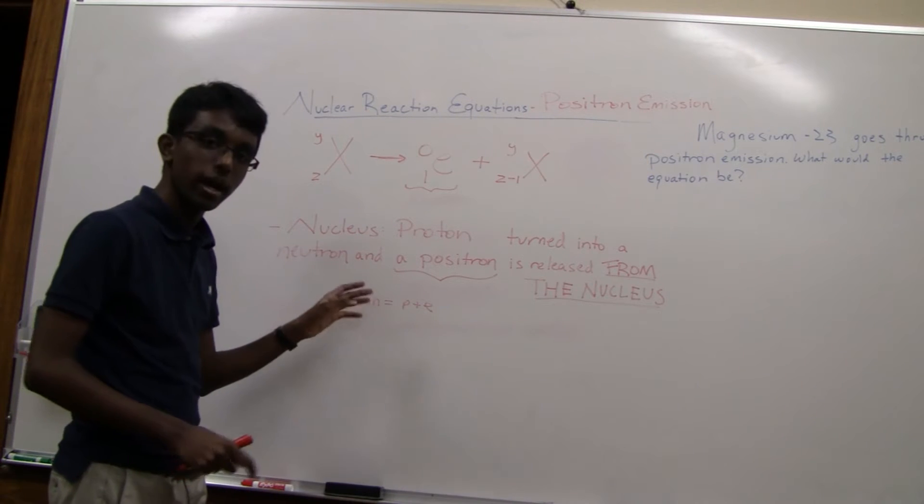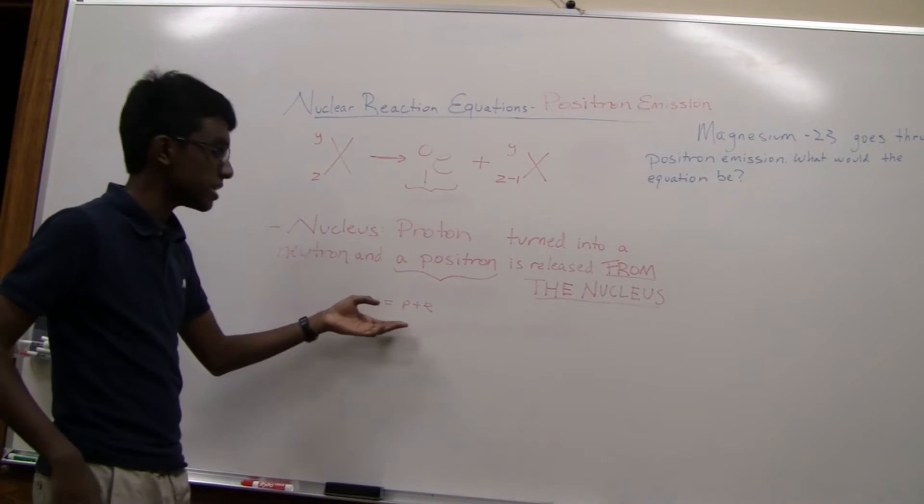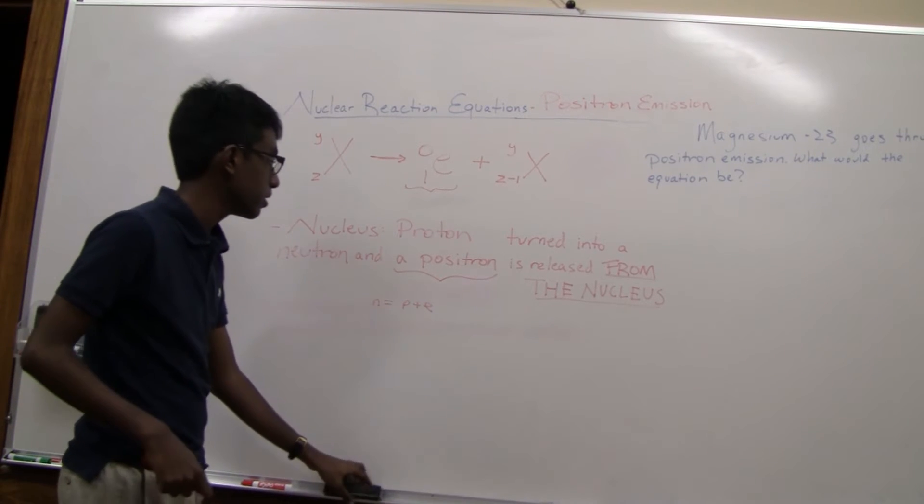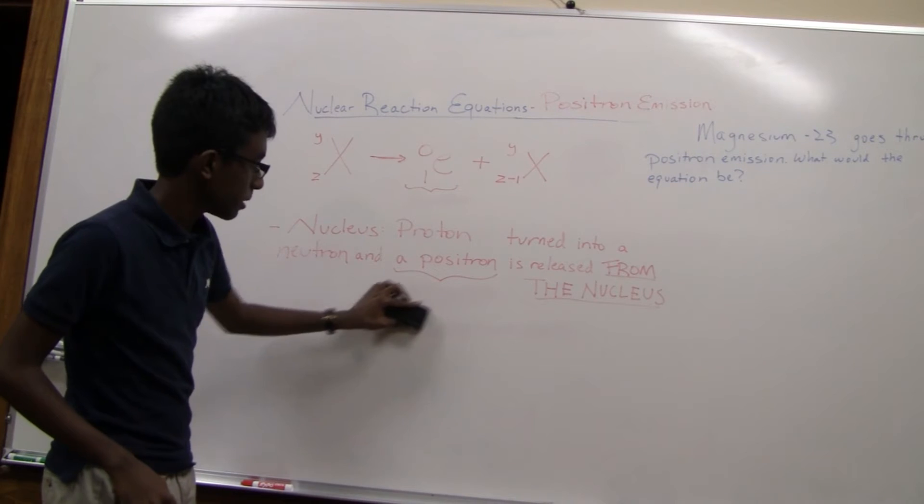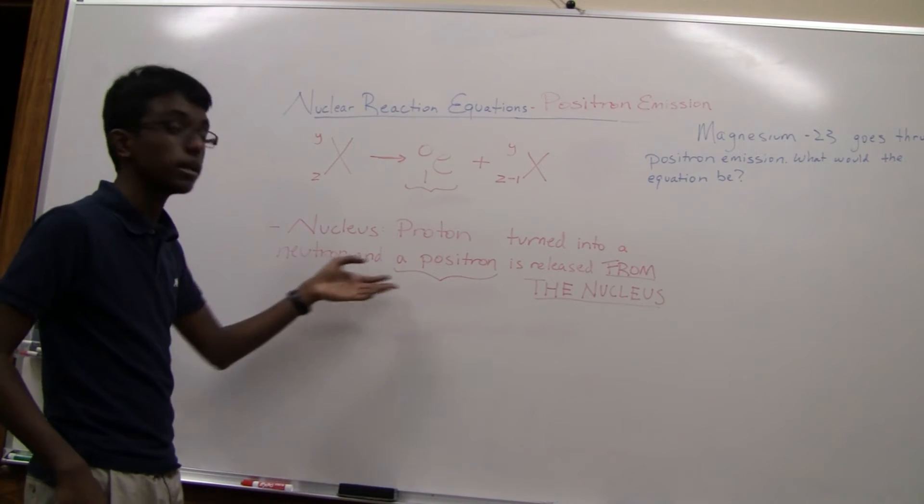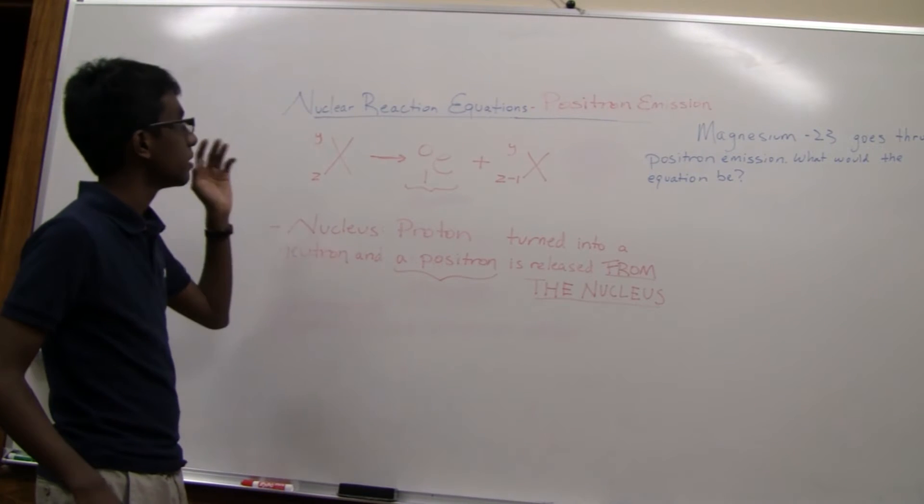So that's why I said in the other video that this idea does not always work, and you have to look at quarks, which is more complicated than what you have to know for nuclear chemistry. Just know that a proton is turned into a neutron and a positron in positron emission.